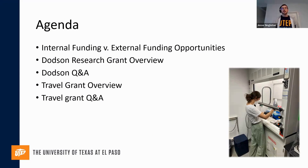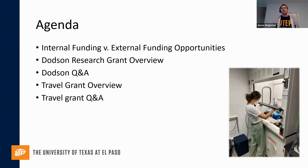Here's our agenda today: we're going to start off talking about internal funding versus external funding so you understand the difference. There are some reporting requirements with the Dotson for external funding, so we'll define those first. Then we'll dive into the Dotson Research Grant, take questions on that, then shift to the travel grant. These are two very different grants — the Dotson Research Grant focuses on research and comes from an endowment, while the travel grant comes from graduate school internal funds.